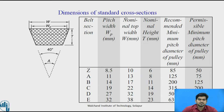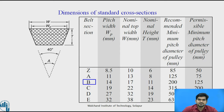Next, the dimension of the cross section: as we have selected the B-belt, the pitch width is 14 mm, the nominal top width is 17 mm, and the nominal height is 11 mm. These are the cross-section dimensions of the B-type V-belt, which has a 40-degree angle. From the tables, the recommended minimum pitch diameter of the pulley is 200 mm and the permissible minimum pitch diameter is 125 mm. You can select a value between these two.